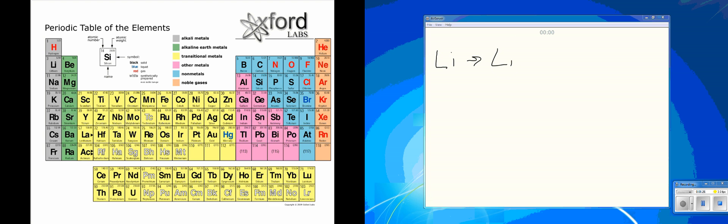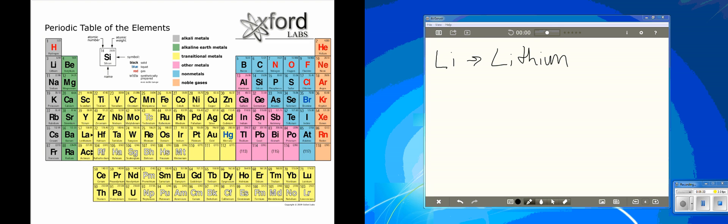So going through the first 20: H is hydrogen, He is helium, Li is lithium, Be is beryllium, B is boron, C is carbon, N is nitrogen, O is oxygen, F is fluorine, Ne is neon, Na is sodium, Mg is magnesium, Al is aluminum, Si is silicon, P is phosphorus, S is sulfur, Cl is chlorine, Ar is argon, K is potassium, and Ca is calcium.